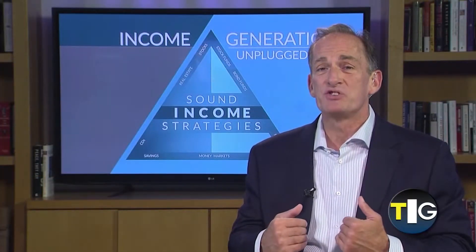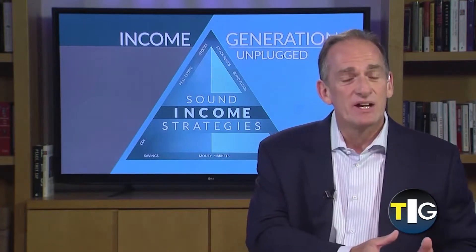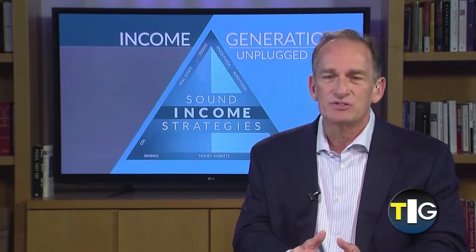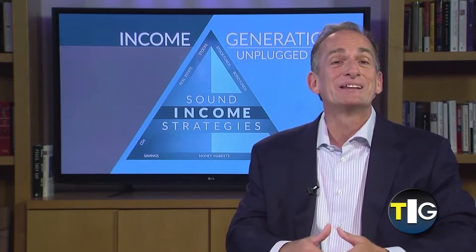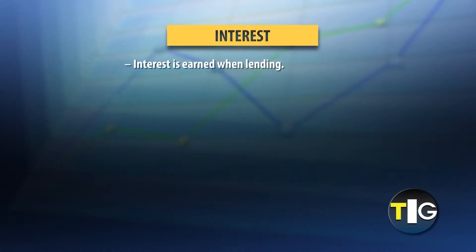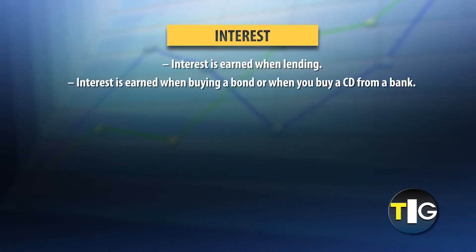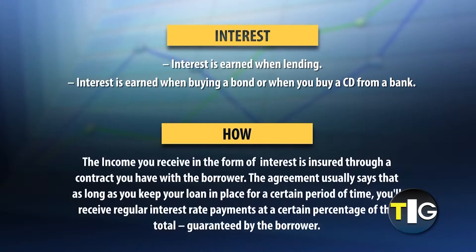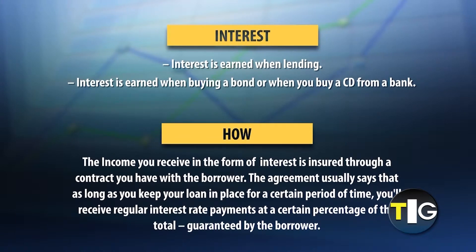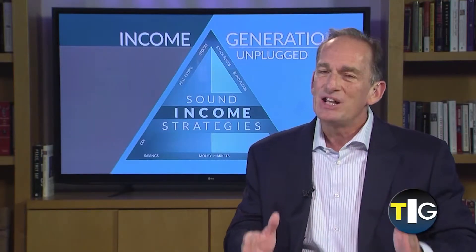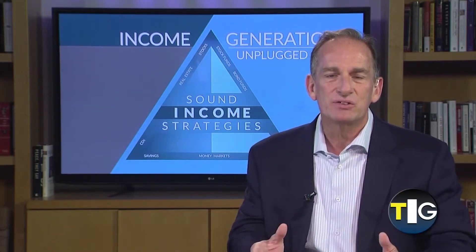When I personally speak about generating income through interest and dividends, I'm talking about two very different things. Interest is what you earn on your money by lending it — for example, to a company when you're buying a bond, or to a bank when you buy a CD. In these examples, the income you receive in the form of interest is guaranteed through a contract with the borrower. The agreement usually says that as long as you keep your loan in place for a certain period of time, you'll receive regular fixed interest rate payments at a certain percentage of the total, and those payments are guaranteed by the borrower.